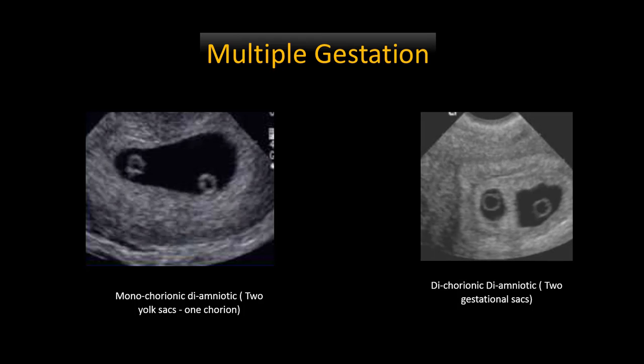Once the diagnosis of intrauterine pregnancy is established, it is essential to scan the entire pelvis to document the number of embryos. If there is multiple gestation, it is important to determine chorionicity as early as possible. The chorion forms a thick echogenic ring that completely encompasses the embryo. If more than one embryo is seen within a single chorionic ring, the pregnancy is monochorionic. The next step is to determine amnionicity. The amnion is a very delicate membrane that may not be seen in early gestation; however, the number of yolk sacs parallels the number of amnions. Therefore, if there are two embryos and two yolk sacs, it is highly likely that the pregnancy is a monochorionic diamniotic twin gestation.